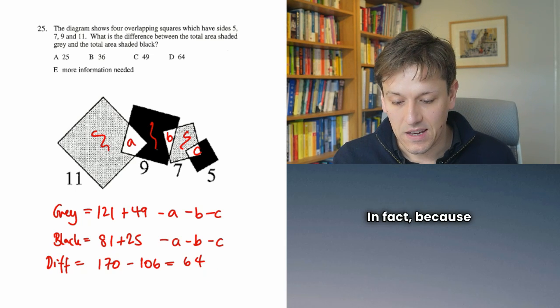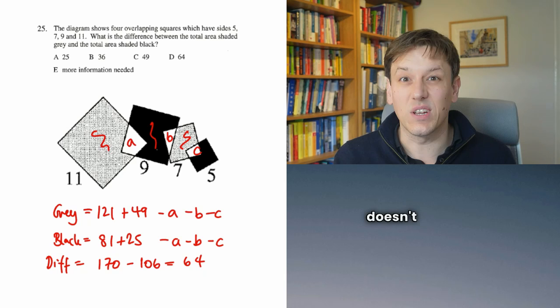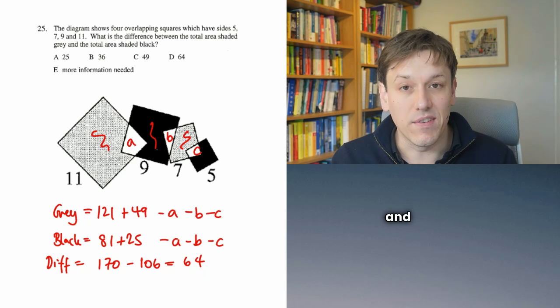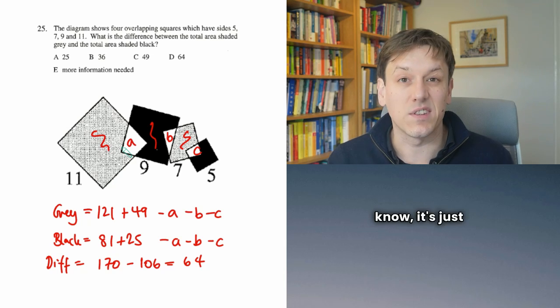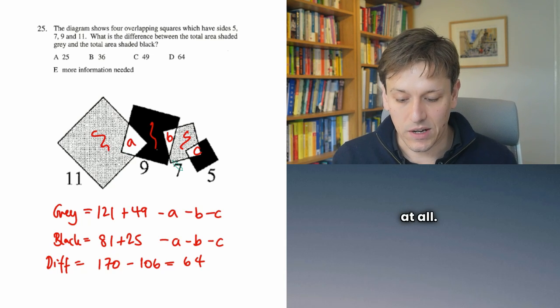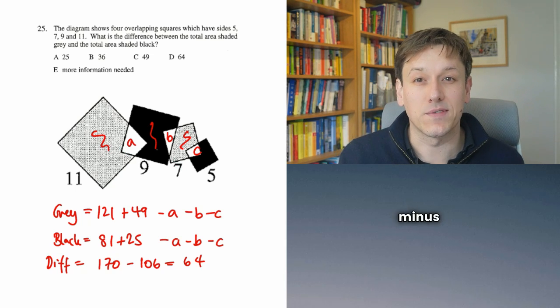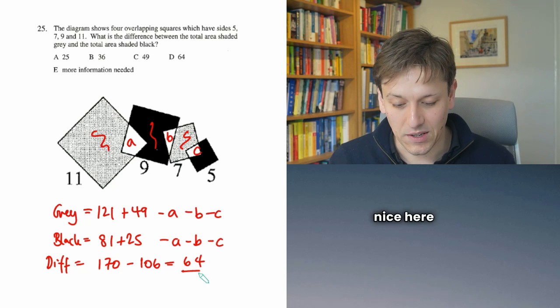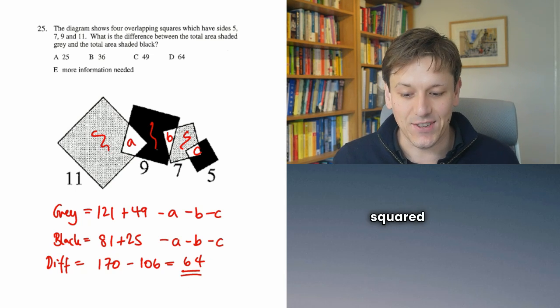In fact, because the overlap doesn't matter, you could even simplify this problem and say, if there is an answer here, you know it's just the same as if the squares didn't overlap at all. 11 squared plus 7 squared minus 9 squared plus 5 squared. And it's quite nice here that that also gives us another square number, 64, 8 squared, as the answer.